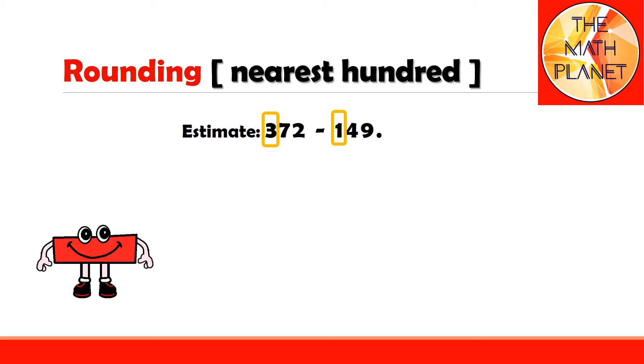Next, I need to determine my lower and upper benchmarks. The lower benchmark for 372 is 300, while the upper benchmark is 400. For the second number, my lower benchmark is 100 and the upper benchmark is 200.